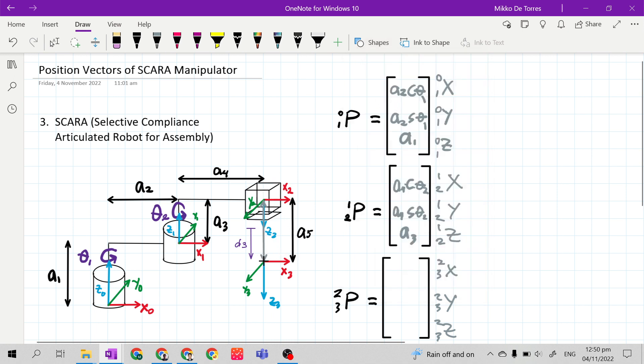So the distance between the origins of frame 2 and frame 3 along x sub 2 axis because frame 2 is now the reference frame is 0 because there is no link length along x sub 2 axis as well as y sub 2 axis. There is no link length.